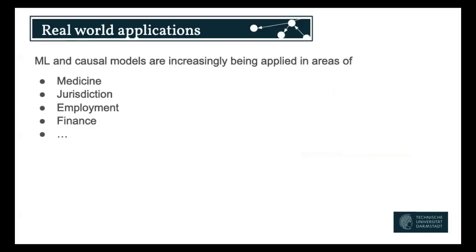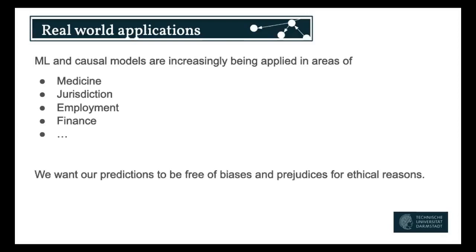We also just don't want to emphasize or reinforce biases. Machine learning models are often used in medicine, jurisdiction, employment, finance, and even college admissions in the US. So we want to prevent our models from discriminating against certain groups. Mainly, I think we will do this for ethical reasons, but in finance and the medical domain, we are also required to report certain fairness statistics by law.